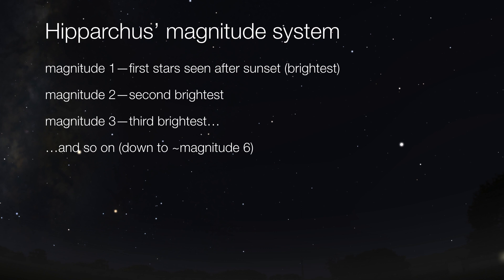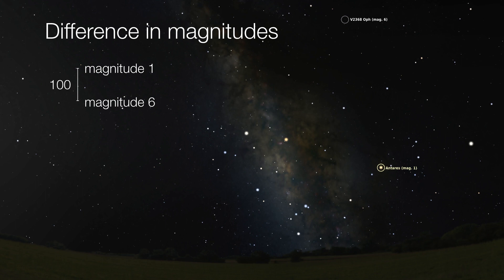This magnitude system still exists to this day. But you could even tell that some of the magnitude one stars have slightly different brightnesses, and there was a need for a more mathematical descriptive way of defining magnitudes.